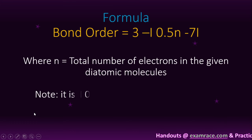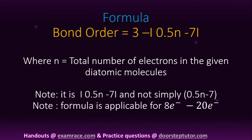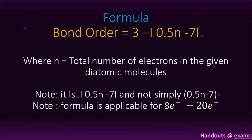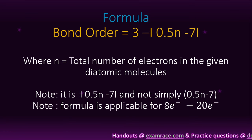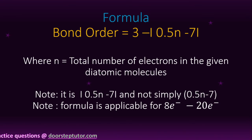What is the formula for the calculation of bond order? Bond order is equal to 3 minus modulus of (0.5 into n minus 7) modulus, where n is the total number of electrons in the given diatomic molecule. Please remember it is a modulus, not a simple bracket. This formula is applicable for 8-electron species to 20-electron species.